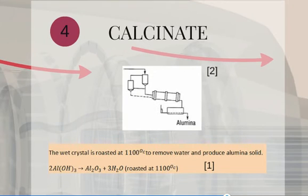Step 4. The wet crystal is roasted at 1100 degrees Celsius to remove water and produce alumina solid.